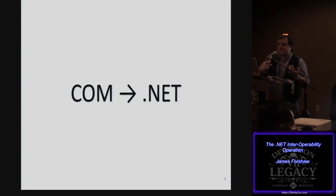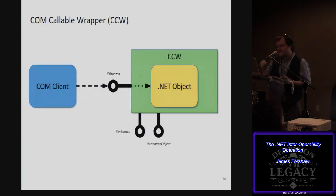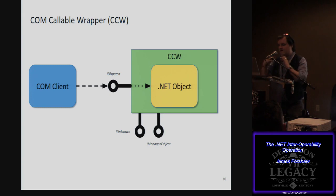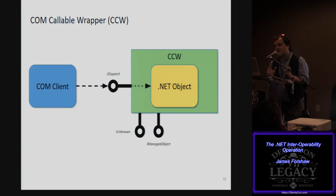What about calling .NET from COM? The .NET runtime creates something called a COM callable wrapper. The COM callable wrapper implements the ABI for COM calling, implements all the interfaces including query interface, and effectively wraps that .NET object. If that .NET object has a COM-implemented interface on it, it will be exposed to a COM client, and the COM client, as far as it can tell, doesn't realize it's talking to a .NET object.